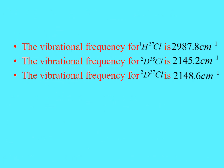Therefore, the vibrational frequency for H³⁷Cl is 2,987.8 cm⁻¹; for D³⁵Cl is 2,145.2 cm⁻¹; and for D³⁷Cl is 2,148.6 cm⁻¹. Thank you.